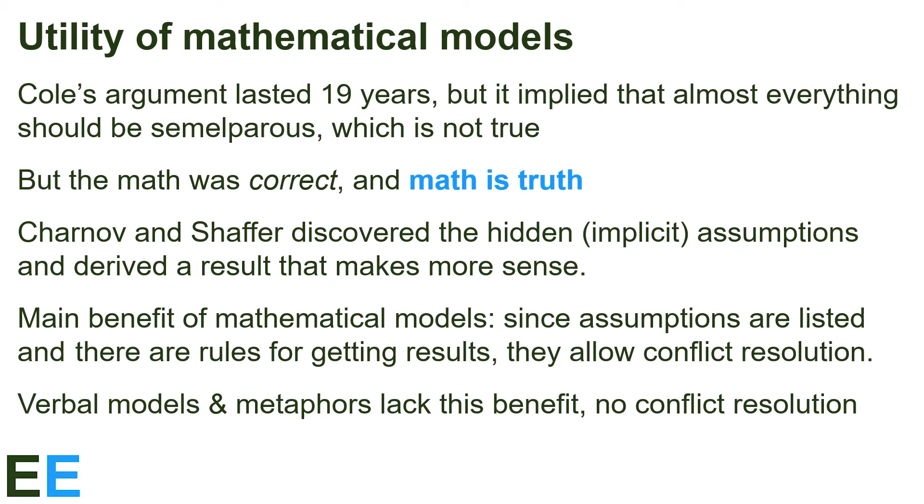This is the main benefit of mathematical models. All the assumptions are listed or are discoverable by which terms are and are not included, and there are widely accepted rules for getting results. Cole's model isn't wrong for systems that don't experience juvenile or adult mortality, but if we want to understand systems that do have those things, then we need to include those terms in the mathematical model.